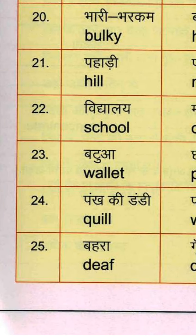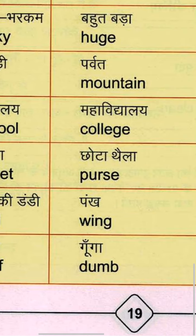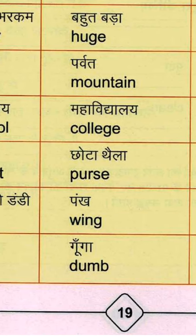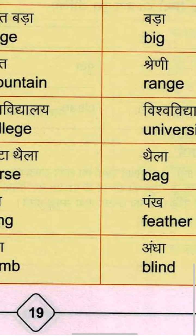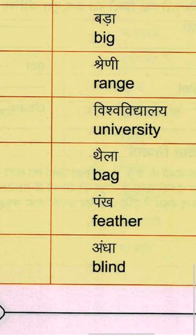Twenty-third group: Batua means Wallet — W-A-L-L-E-T. Chhota thela means Purse — P-U-R-S-E. And Thela means Bag — B-A-G.